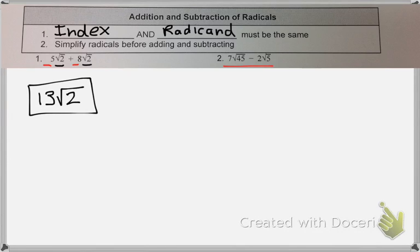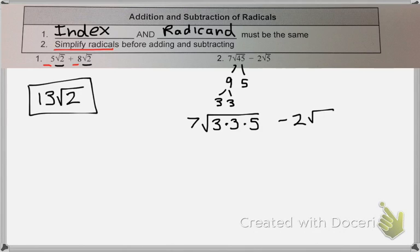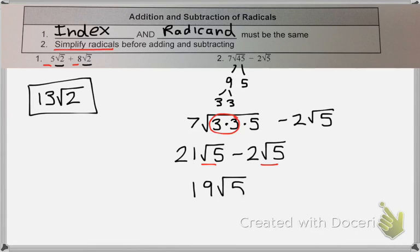Sometimes you'll have something where you can't initially add or subtract it, but you always need to simplify your radicals first. So you might notice that square root of 45 needs to be simplified. So let's factor it out. So I'm looking for a group of 2. So remember, when I move my 3 to the outside, I get 21. And now I am ready to subtract, because my index and my radical are the same. So all I need to do is 21 minus 2, which is 19. So my answer is 19 root 5.